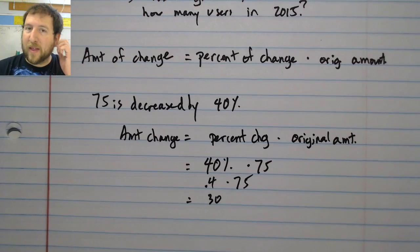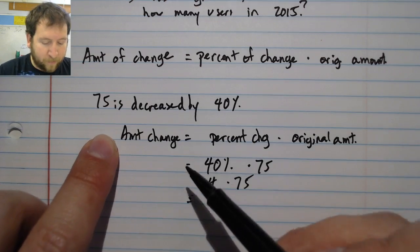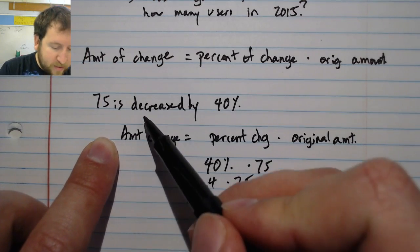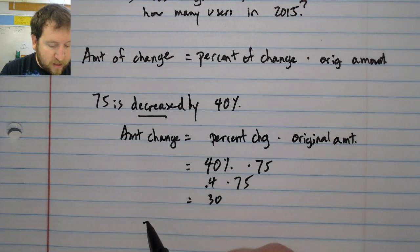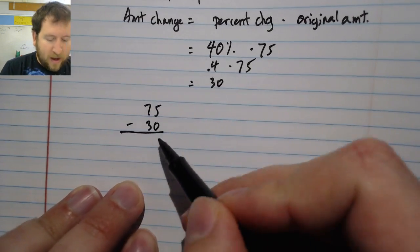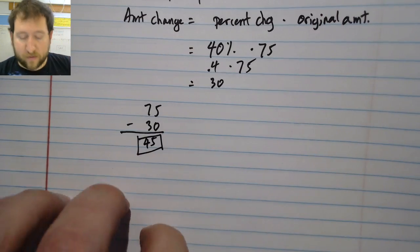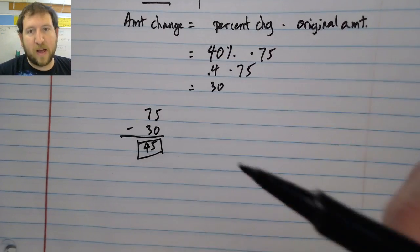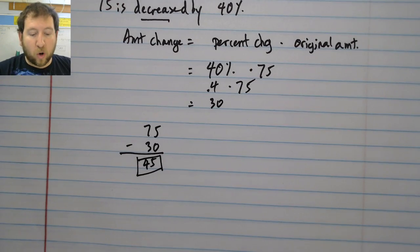That is going to be equal to 30. Now that is just the amount of change. Notice we have not solved our total problem. When 75 changes by 40 percent, it's going to move 30. In this case, it's being decreased, so we're going to be going down. I'm going to do 75 minus 30, and this is going to give me 45. My answer is 45, not 30, because this is only an intermediate step to get to my real answer.